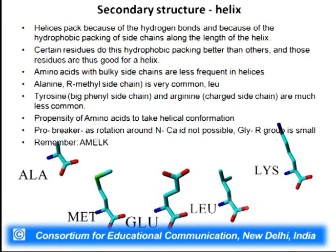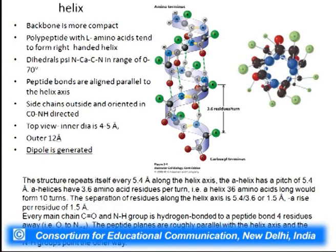Prolines and glycines are alpha-helix breakers — proline because its R group is not flexible, and glycine because its R group is very small. The alpha helix resembles a coiled ribbon or telephone cord. The backbone is compact, unlike the extended backbone of beta sheets. L-amino acids, predominant in proteins, tend to give right-handed helices. The dihedral phi and psi angles in alpha helices are around 0 to -70 degrees.